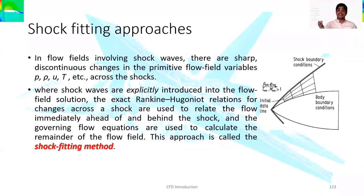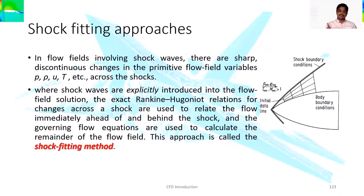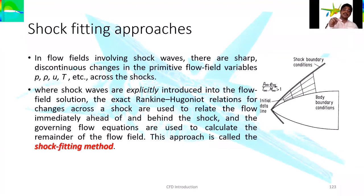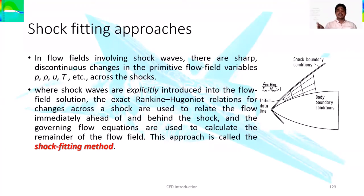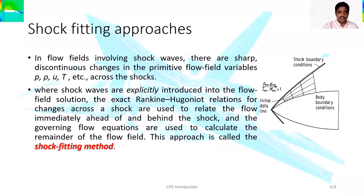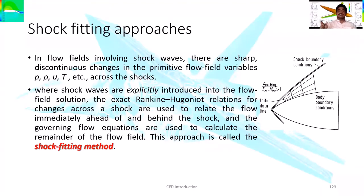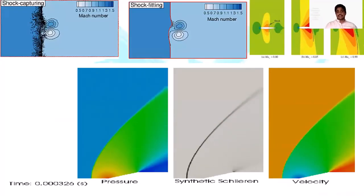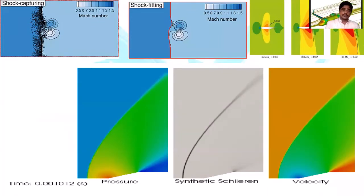In high-speed aerodynamics, the Rankine-Hugoniot equations need to be adopted. We initially predict where the shock wave can occur — if it is an oblique shock wave, we find the oblique shock wave relations and immediately place that shock wave location so the CFD can understand and calculate flow properties at that location. This is called the shock fitting method. In the shock capturing method, the algorithm itself takes care of capturing the shock wave, whereas in shock fitting, the user specifies the shock location.